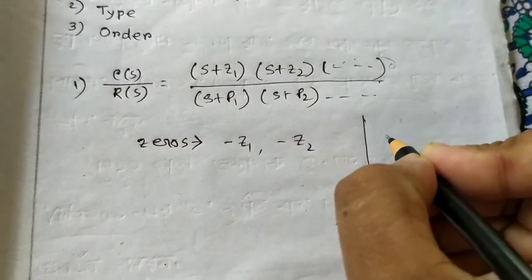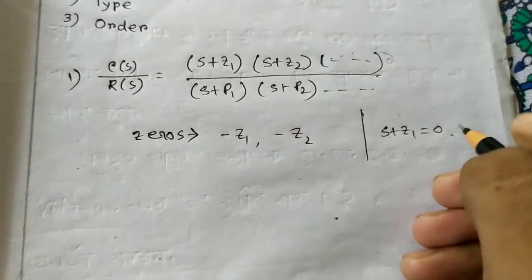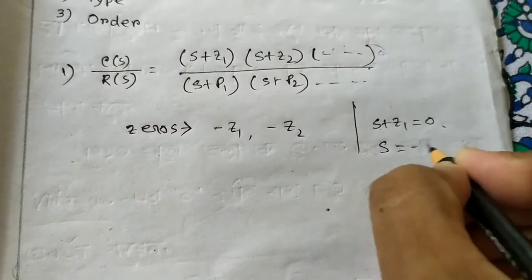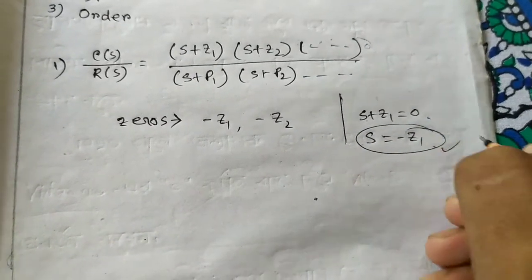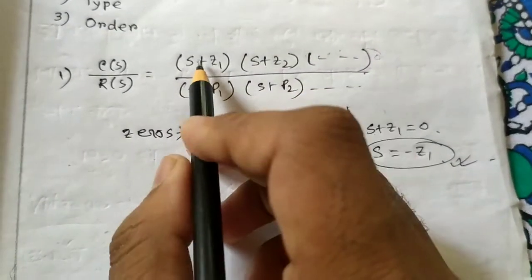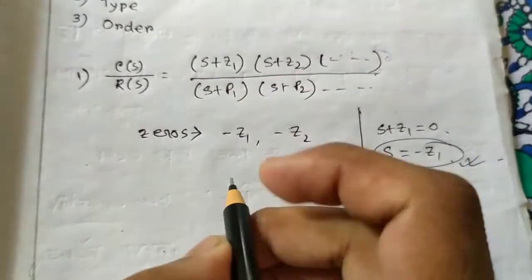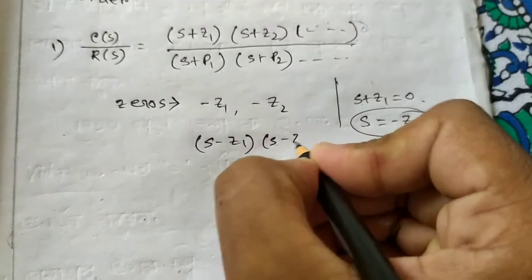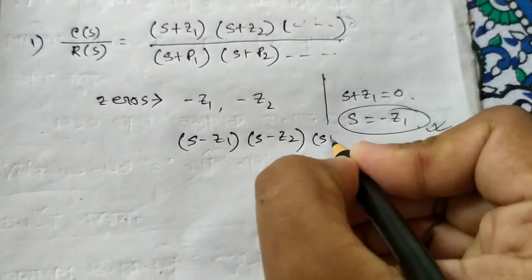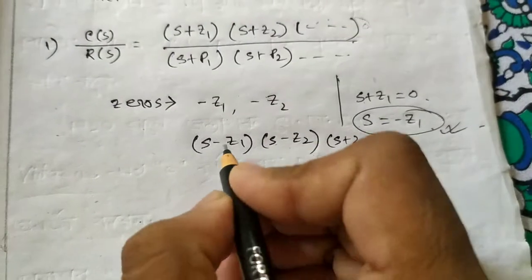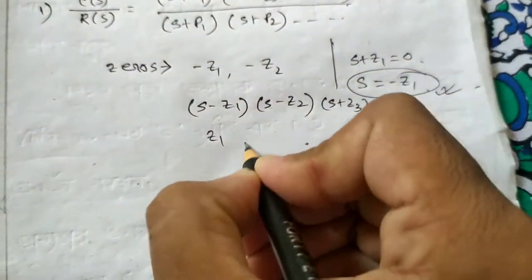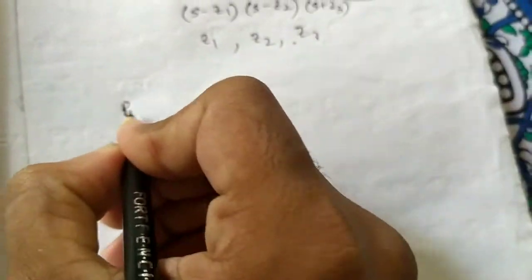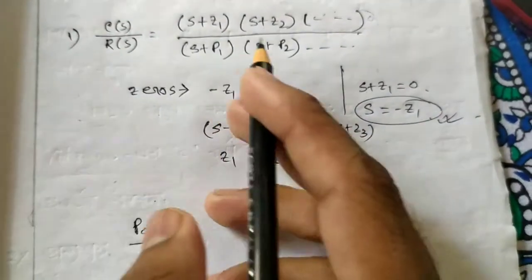Why minus Z1, minus Z2? Simply put S + Z1 equals zero, and we get S equals minus Z1 — that is your zero value. Now if it's written as (S - Z1)(S - Z2)(S + Z3), then the zeros will be Z1, Z2, and minus Z3.